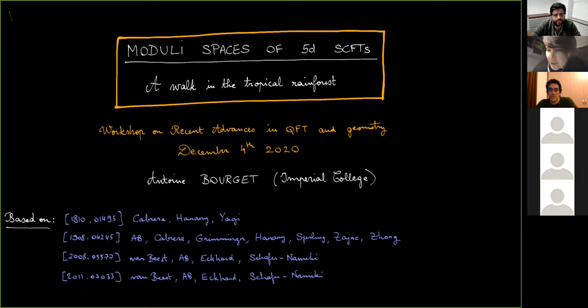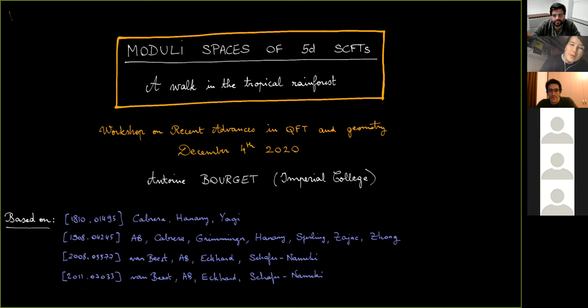I think we're still missing one, but we can do it later. Okay, so let's start the session. This is sort of the last session of this mini workshop. And it's a great pleasure to have Antoine Bourget from Imperial College in London, who will talk about a walk in the tropical rainforest, or a modulized basis of 5D SCFTs. So Antoine, take it away.